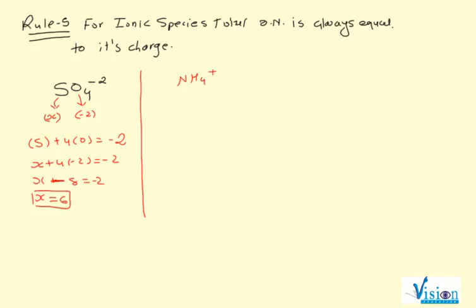If you're given NH₄ plus, H has a charge of plus 1. Okay, nitrogen is unknown, X. So nitrogen plus 4 hydrogen equal to what? Plus 1.